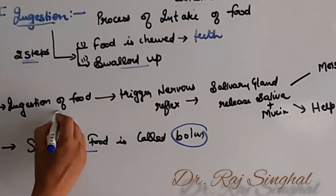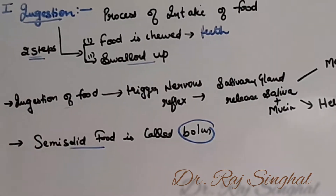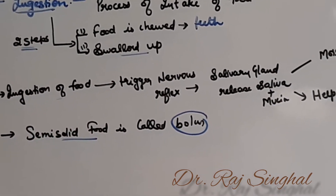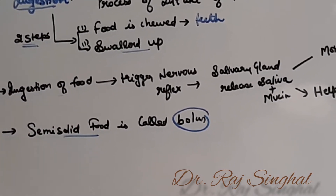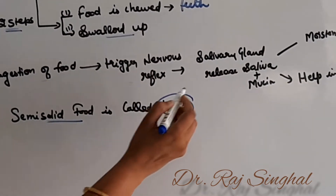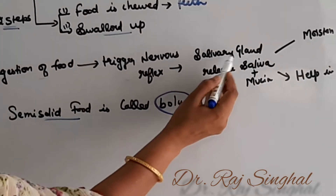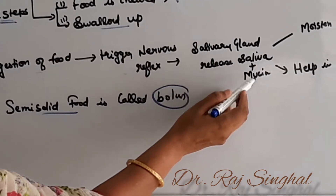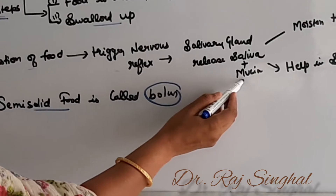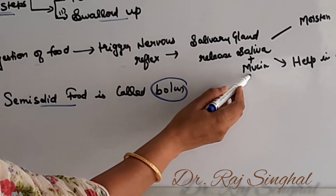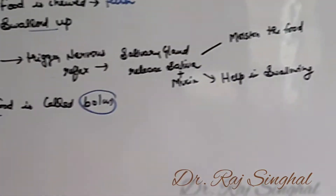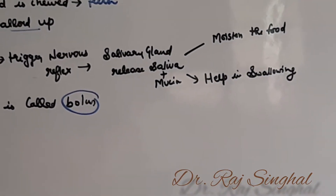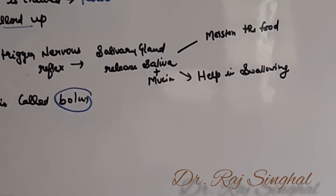When the food is ingested and broken down into smaller pieces, it triggers a reflex because of which the salivary glands release saliva along with mucin, which helps to moisten the food. Saliva performs different functions.